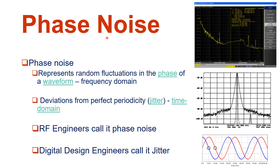Phase noise is random fluctuations in the phase of a waveform. For example, consider this sinusoidal waveform — the red line — which has a periodic sinusoidal shape with amplitude and phase with respect to time. The phase of this red sine wave at the starting point is zero, then 90 degrees, 180 degrees, 270 degrees, and 360 degrees. In radians: zero, pi/2, pi, 3pi/2, and 2pi.